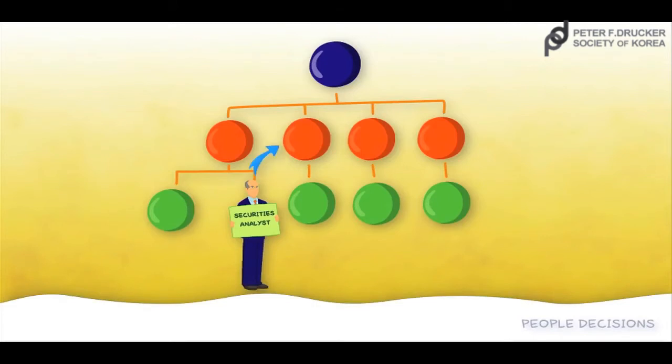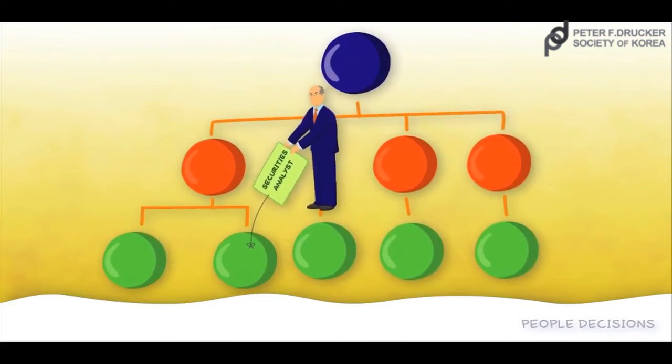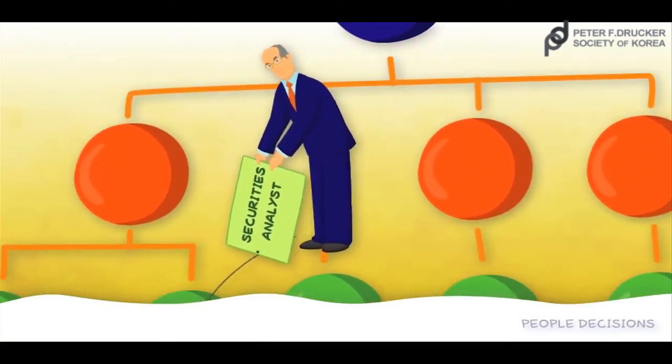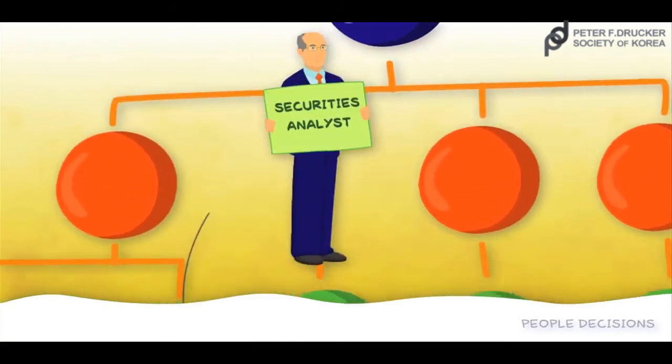'Many people stumble when they move up the ladder because they do what I did in that London bank,' Drucker explained. 'They continue in their new assignment what made them successful in the old assignment and what earned them the promotion. Then they turn incompetent, not because they have been incompetent, but because they are doing the wrong things.'